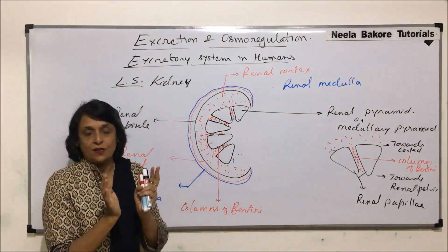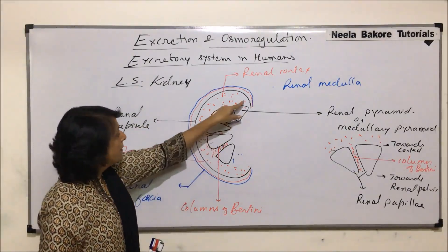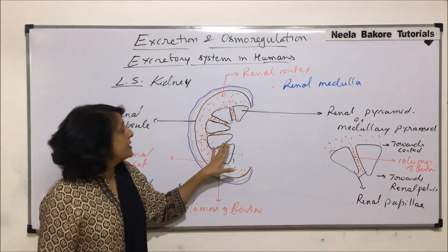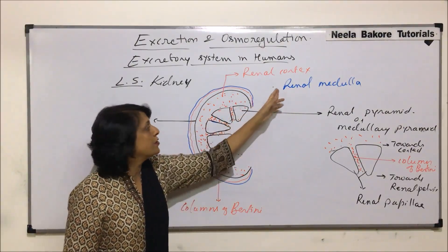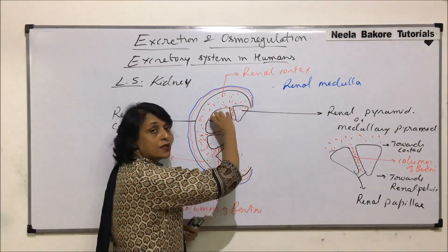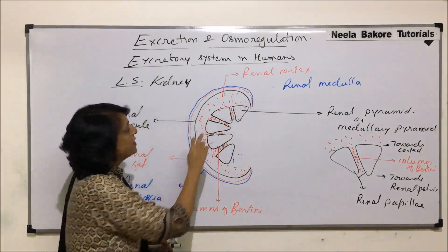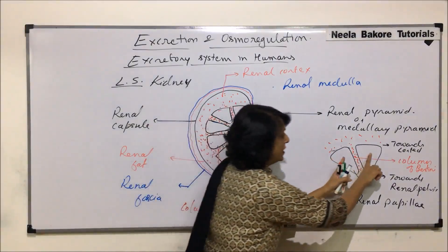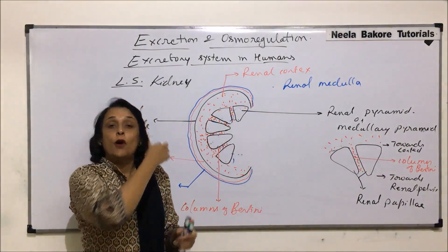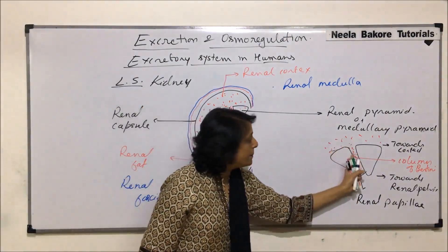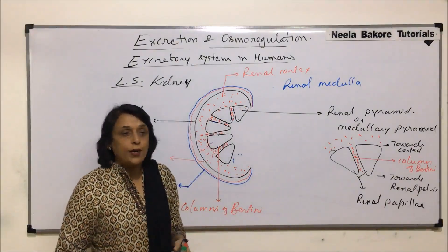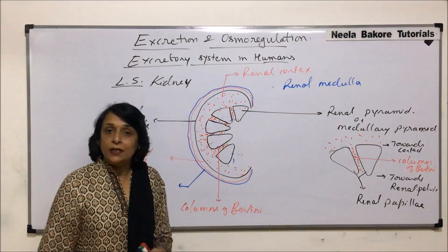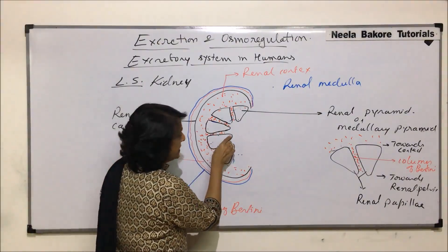There are two distinct bands: the outer band is the renal cortex, and the inner band is the medulla. In the medullary region we are seeing these pyramids, and because they are seen there we call them renal pyramids. In between the pyramids, a band of cortex extends — and these bands of cortex are known as columns of Bertini.